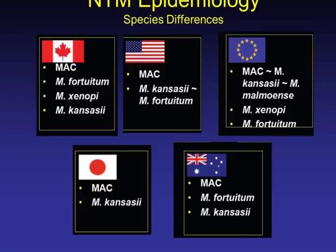There is actually a geographic epidemiology to NTM strains. Practicing in Canada, you may see more M. xenopei or fortuitum. In Japan, there's more focus on MAC and kansasii. In Europe, you might see more malmoense. Here in the Southeast, we see a lot of MAC and abscessus. Kansasii is more a phenomenon of the Midwest and middle parts of the country, as the name suggests.